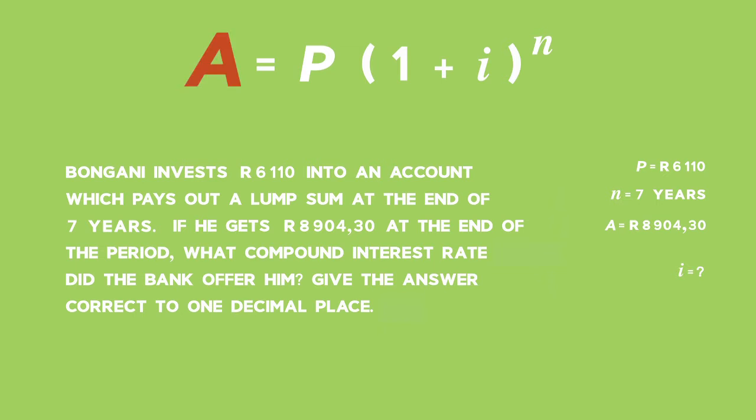We see that we have all the variables except for the interest rate, i. Therefore, using the formula A equals P, open brackets, one plus i, close brackets, to the power of n, we can put in the value for A, P and n and work out the value of i.